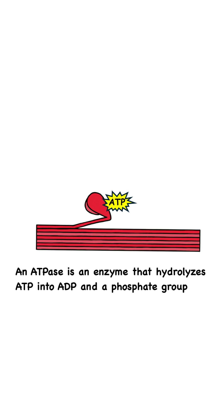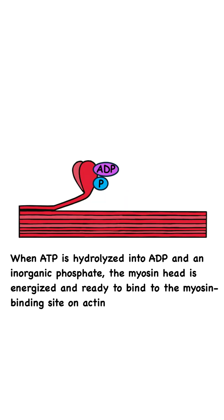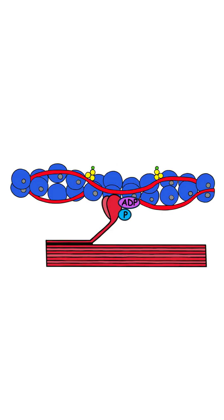When ATP is hydrolyzed into ADP and inorganic phosphate, the myosin head is energized and ready to bind to the myosin binding site on actin. With actin's binding sites now exposed, the myosin head attaches to actin. This is called a crossbridge.